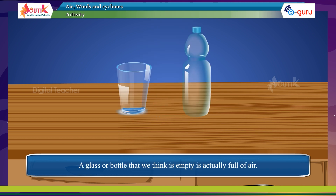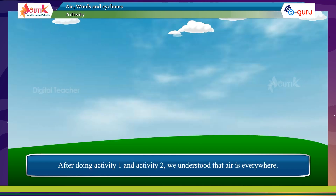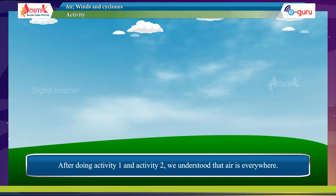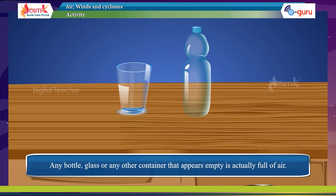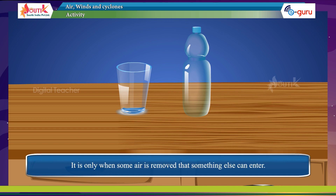A glass or bottle that we think is empty is actually full of air. After doing activities 1 and 2, we understand that air is everywhere. Any bottle, glass, or other container that appears empty is actually full of air. Nothing can be added to it unless the air inside is removed — it is only when some air is removed that something else can enter. Air occupies the space around us.